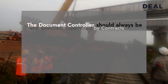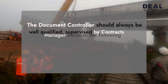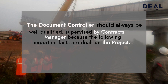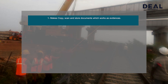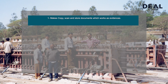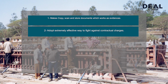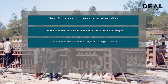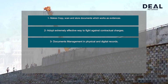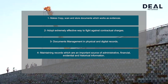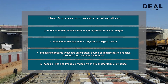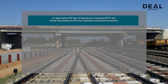The document controller should always be well qualified and supervised by a contracts manager, because the following important tasks are dealt with on the project: making copies, scanning and storing documents which work as evidence; adopting an extremely effective way to fight against contractual charges; document management in physical and digital records; maintaining records which are an important source of administrative, financial, evidential and historical information; keeping files and images and videos which are another form of evidence; and ensuring searchable PDF files of request for proposals and tender documents, which are the most important contractual documents.